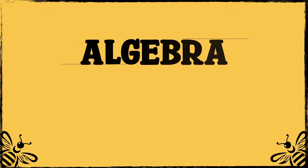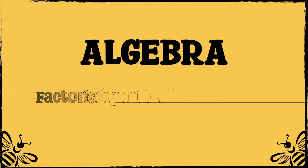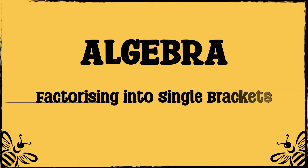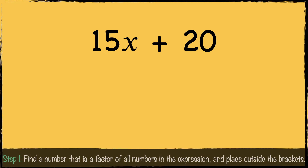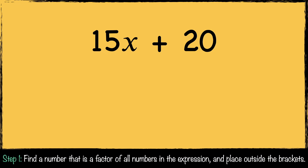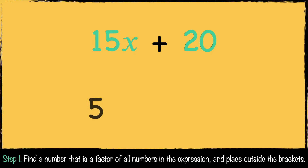In this video we'll look at factorizing into single brackets. To factorize, we look for a number which is a factor of all numbers in the expression. In this expression, 5 is a factor of both 15 and 20.